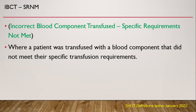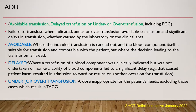The second part is incorrect blood component transfused — specific requirements not met. This is where a patient was transfused with a blood component that did not meet their specific transfusion requirements. Then, avoidable transfusion, delayed transfusion, or under or over transfusion.